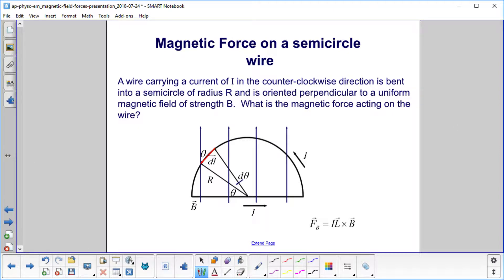A wire carrying a current of I in the counterclockwise direction is bent into a semicircle of radius R and is oriented perpendicular to a uniform magnetic field of strength B, and that's going up. What is the magnetic force acting on the entire wire?